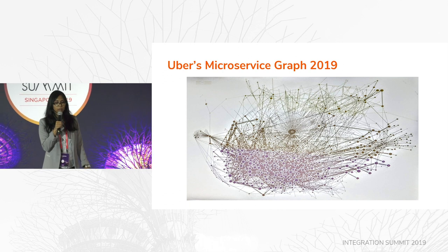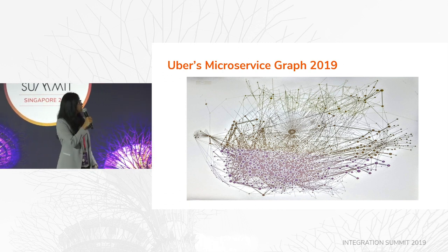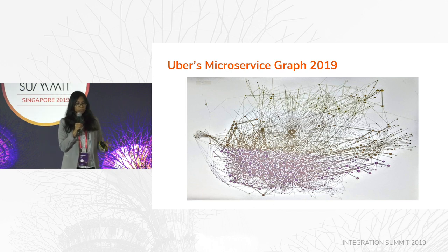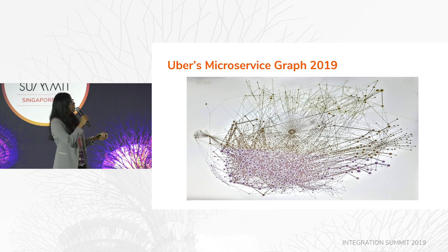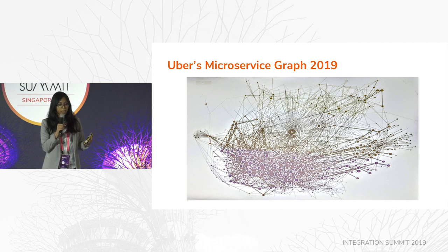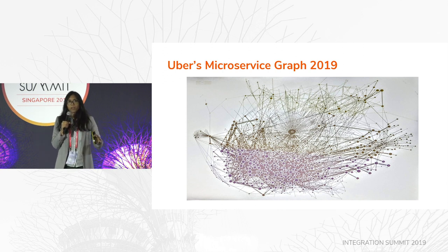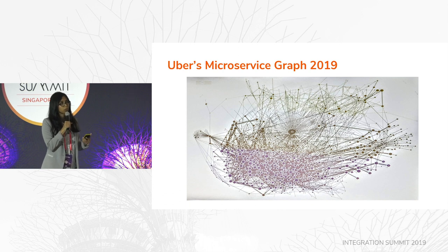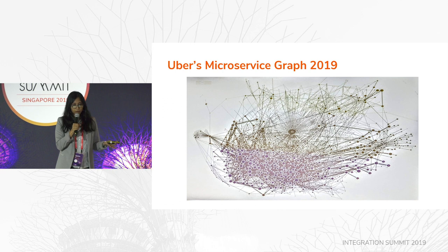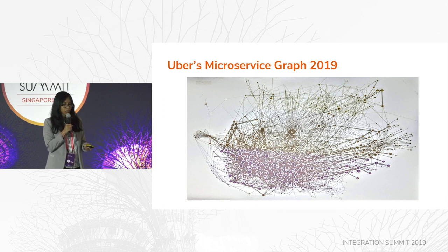This is Uber's microservice graph, presented at a conference earlier this year. It looks daunting — not because of the number of microservices, but mostly because of the far and wide many-to-many connectivity, which creates a significant governance challenge. You're looking at this many microservices developed by lots of teams, which can create issues with managing them — especially when it comes to observability, team communications, versioning, and discovering these microservices.